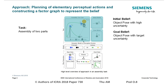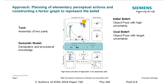Furthermore, a semantic model of the required declarative and procedural knowledge is available. It captures concepts such as sensors and their properties as well as available elementary actions such as perception and sensor fusion algorithms.